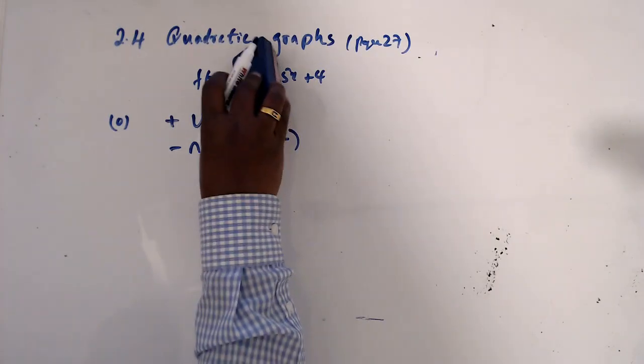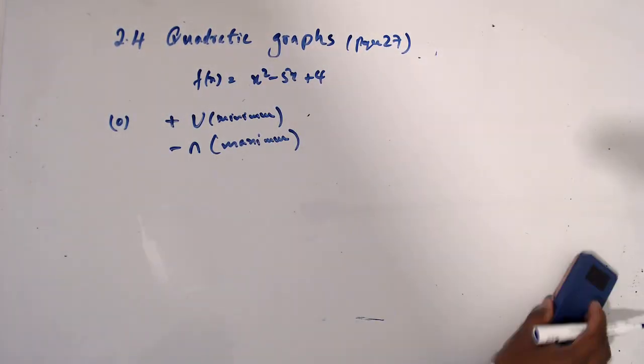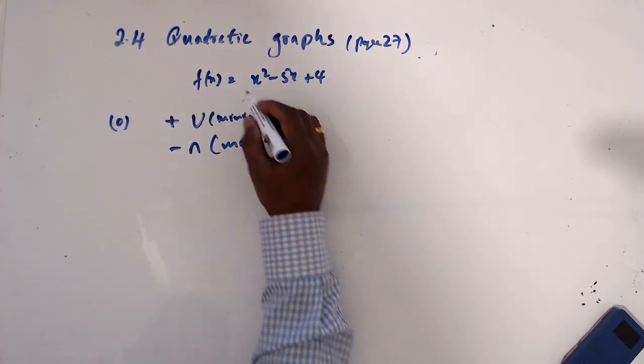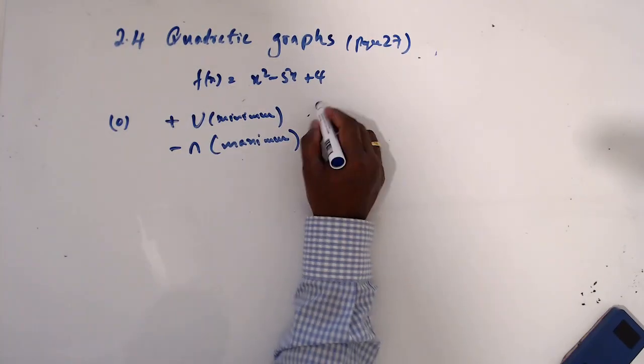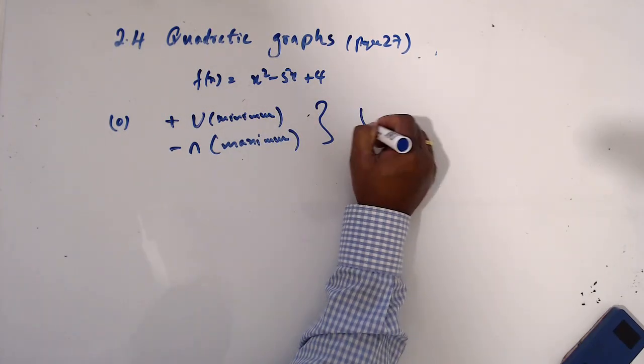Now when you look at this graph x squared minus 5x plus 4, you know that this is positive. Then the conclusion is you have a minimum.